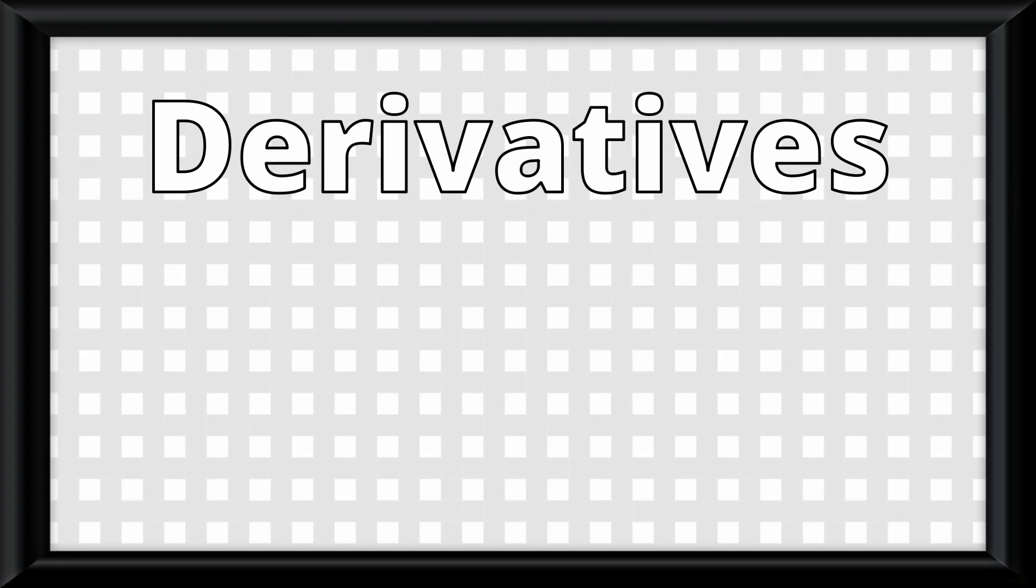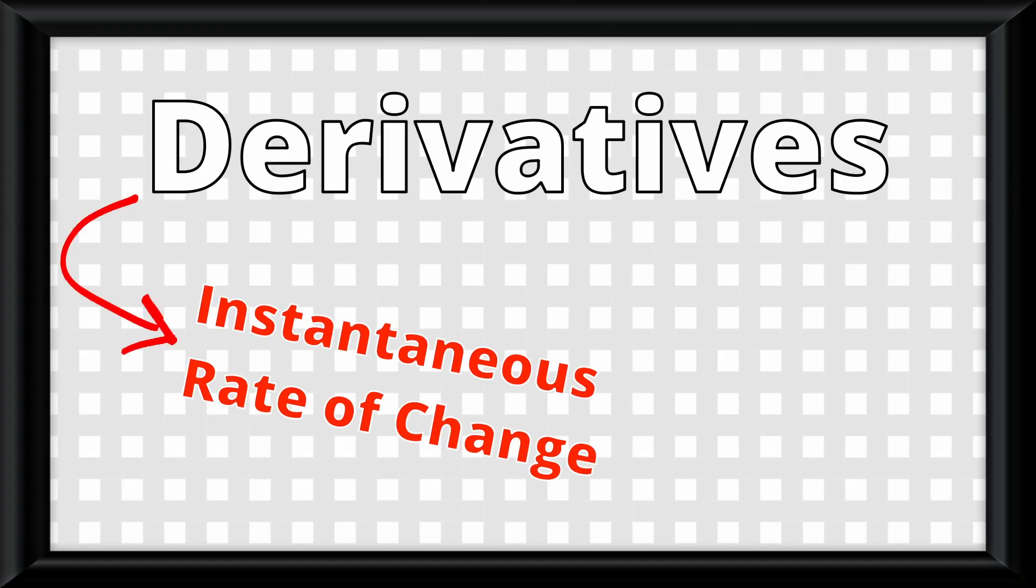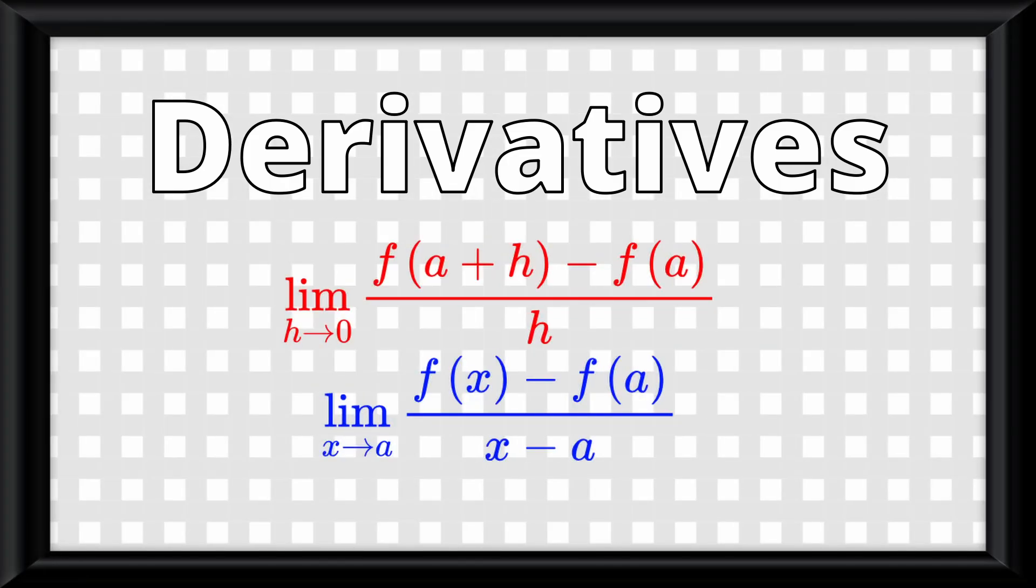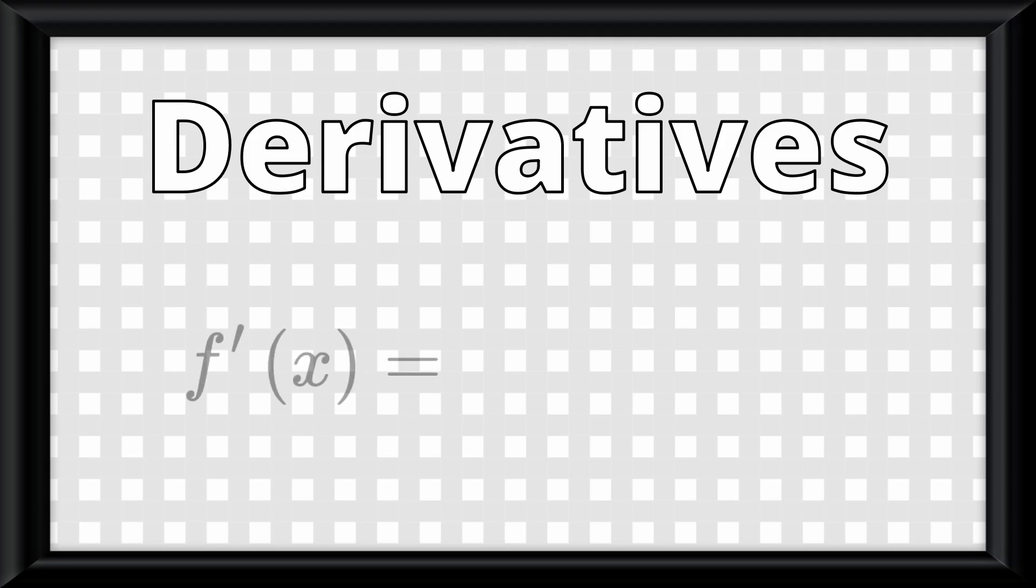So, derivatives. Like I said earlier, they are literally the exact thing we've been doing this video. The instantaneous rate of change. The way we find it is with the same formulas you just learned. The notation is a little different. You will either get this notation, which is known as f prime of x, or you could get this one, which is the derivative of y with respect to x. Both of these refer to finding derivatives.